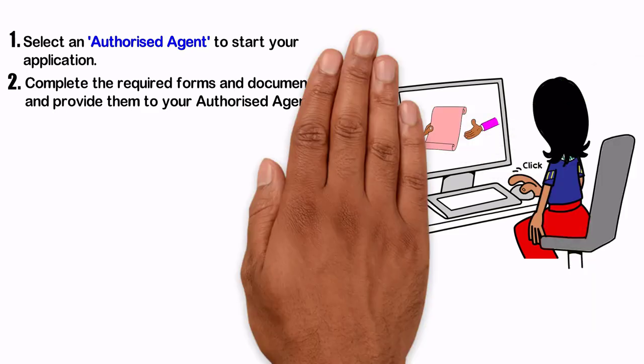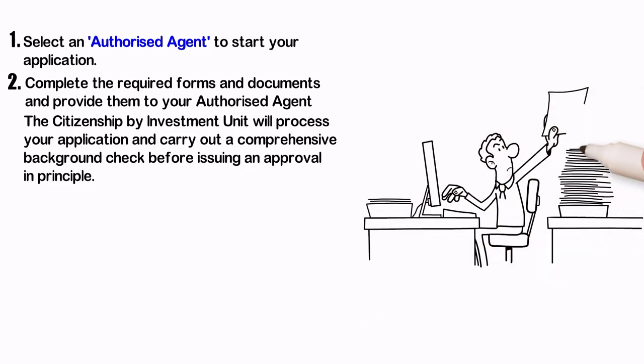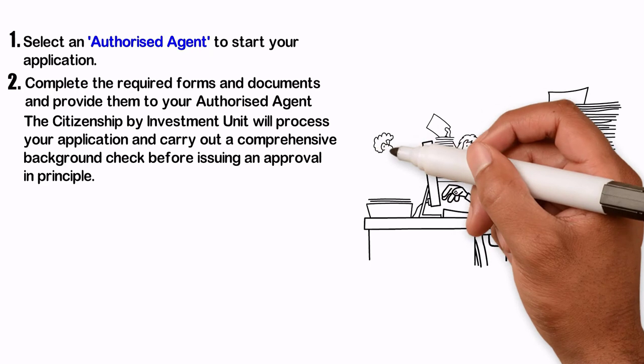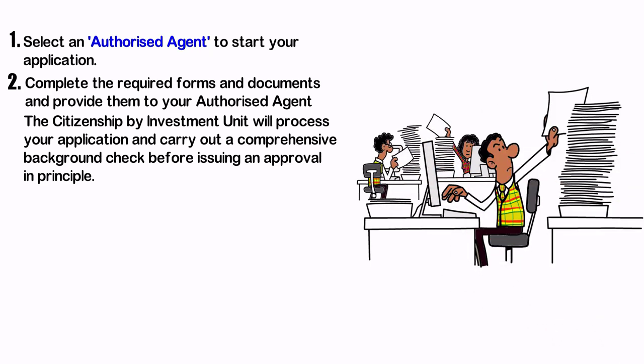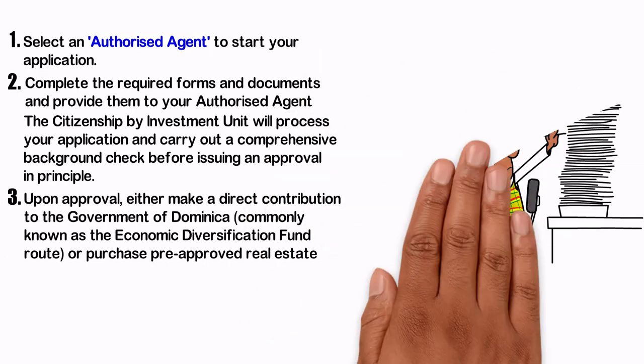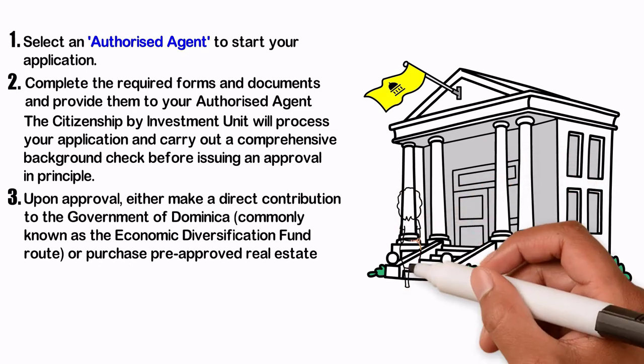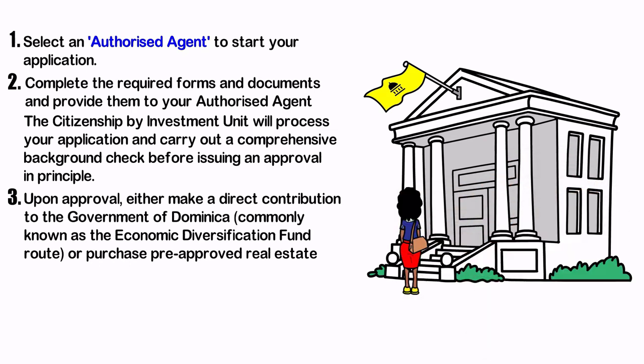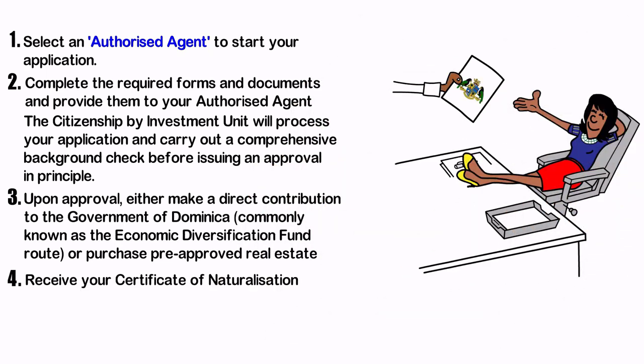The Citizenship by Investment Unit will process your application and carry out a comprehensive background check before issuing an approval in principle. Upon approval, either make a direct contribution to the government of Dominica, commonly known as the Economic Diversification Fund route, or purchase pre-approved real estate. Receive your certificate of naturalization.